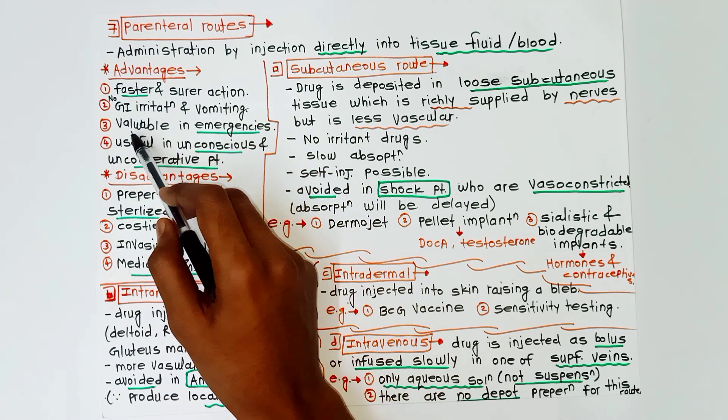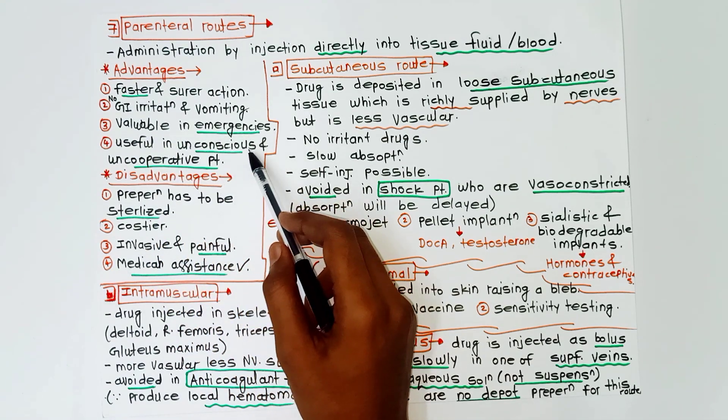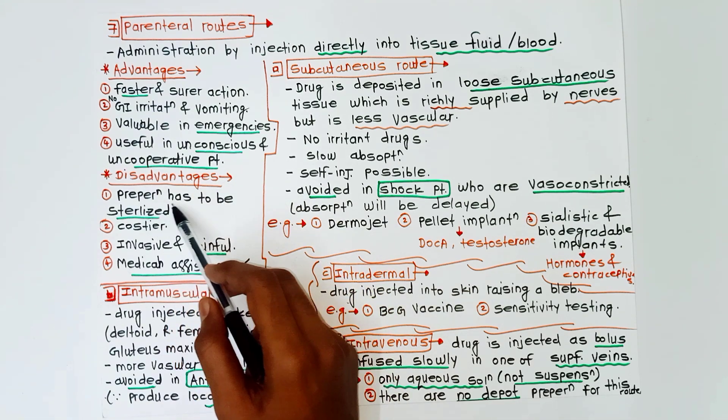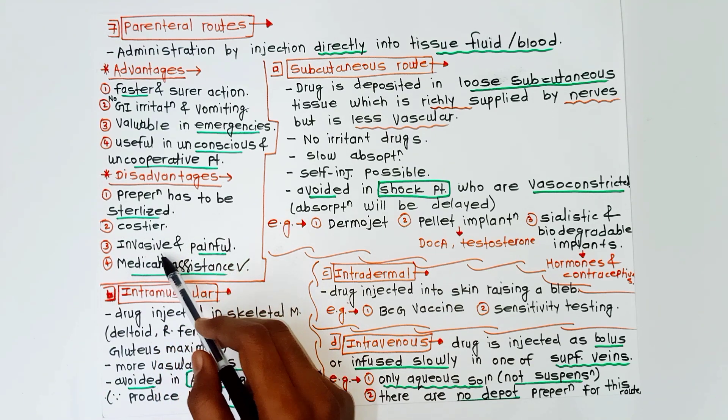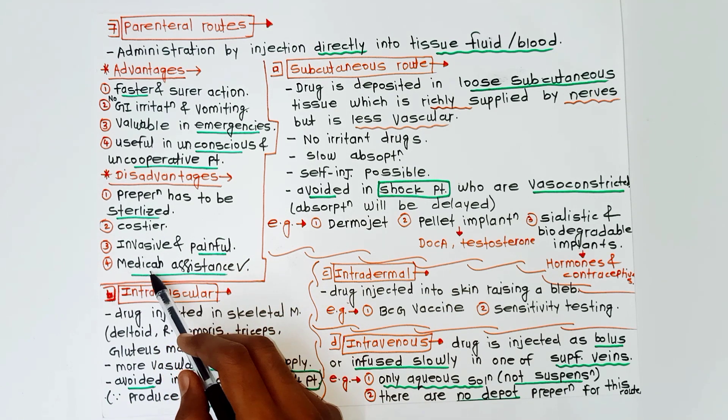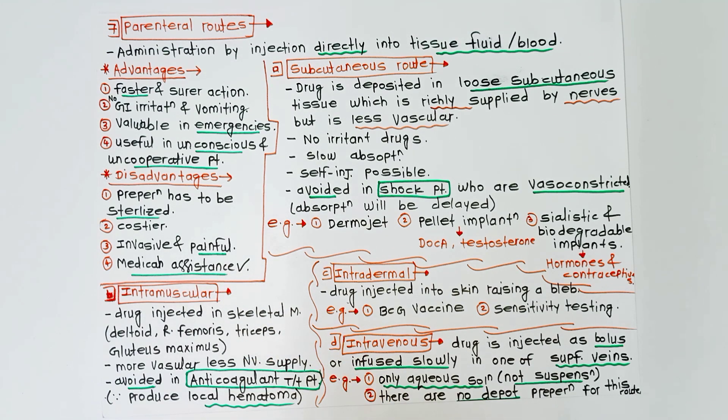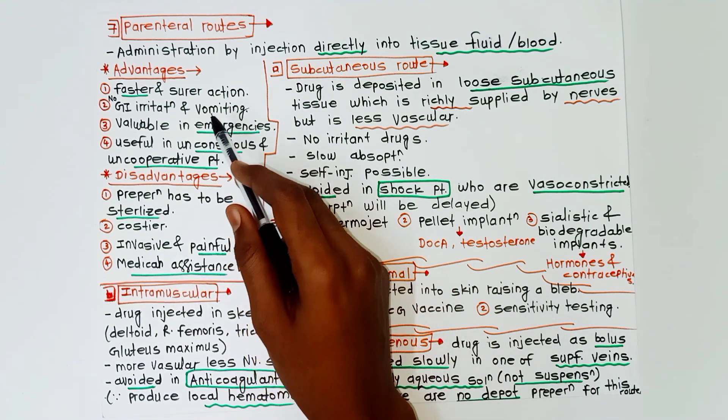Disadvantages are: preparation has to be sterilized, it is costlier, invasive and painful, medical assistance is needed, and sometimes complications can occur. Then there are four subtypes of the parenteral route: subcutaneous, intradermal, intravenous, and intramuscular.